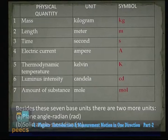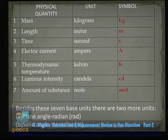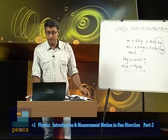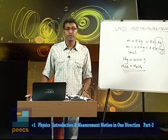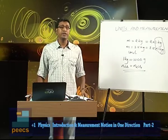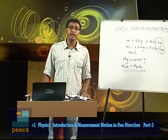The 7 SI base quantities and their units are: mass (kilogram), length (meter), time (second), electric current (ampere), thermodynamic temperature (kelvin), luminous intensity (candela), and amount of substance (mole). Besides these 7 base units, there are 2 supplementary units: radian for plane angle, and steradian for solid angle. The unit of any other physical quantity can be derived in terms of these base units.